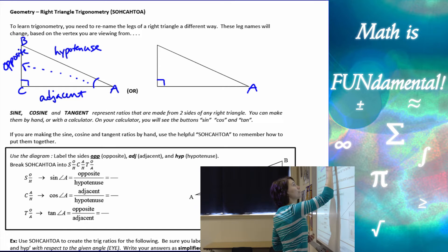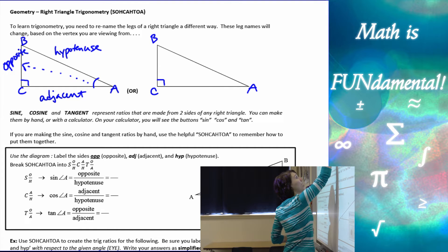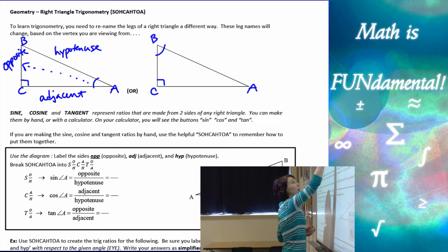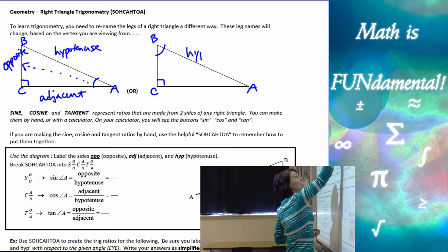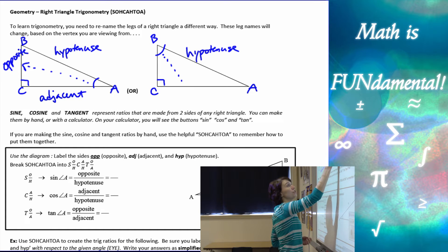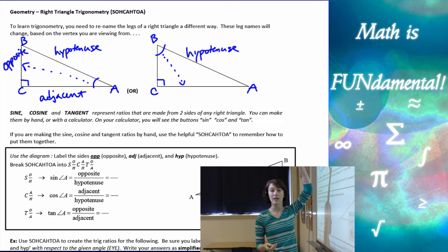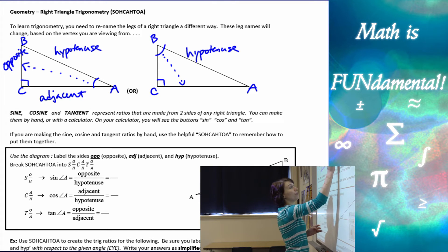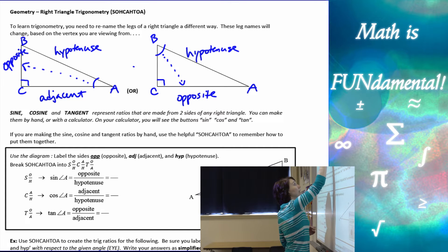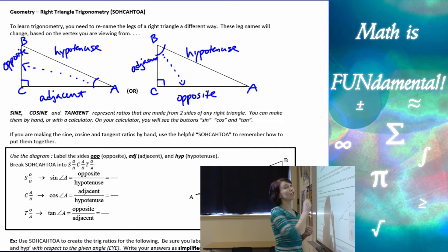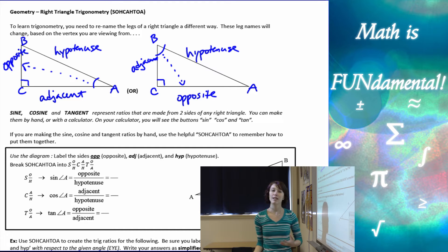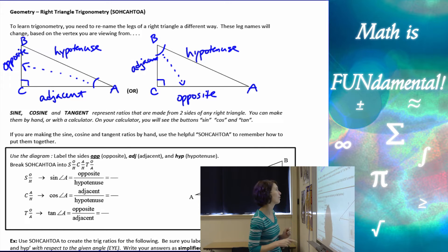Now if I had the same triangle but our reference angle was angle B, our hypotenuse wouldn't change because the hypotenuse is always across from the right angle. But now our adjacent and our opposite sides are switched. If we're talking about angle B and we go opposite from angle B, that side becomes my opposite, and the other side becomes my adjacent. So it depends on which angle is your reference angle, and you always want to pay attention to which one you're supposed to be looking from.